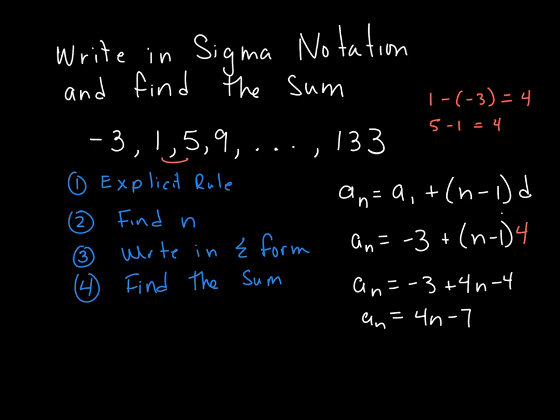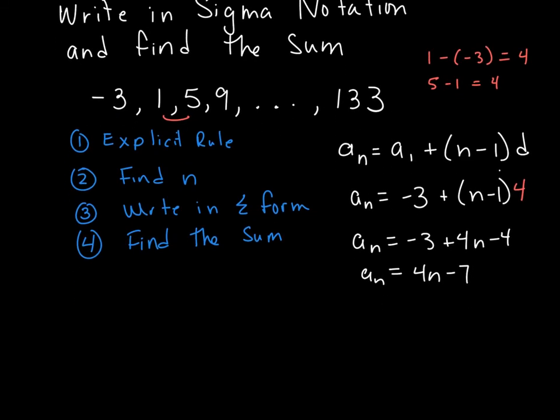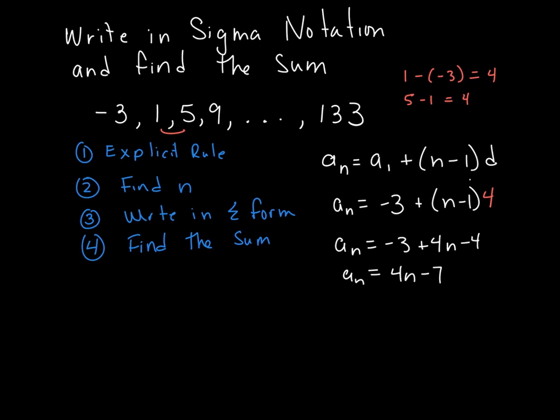Now we're going to do the same thing we did last time. The last term in the sequence that we have here is this piece here, a sub n is 133. So I'm going to work backwards and solve for n. So I know the last term that I have is 133. Set that equal to 4n minus 7 so I can find n. I do that by adding 7 to both sides, which gives me 140 equals 4n. And that n equals 35.